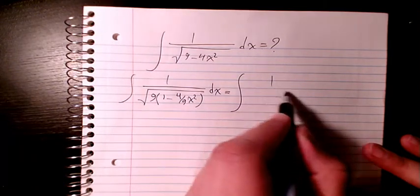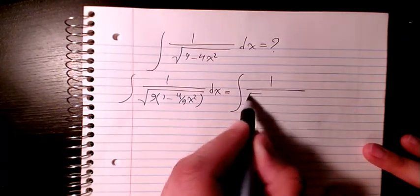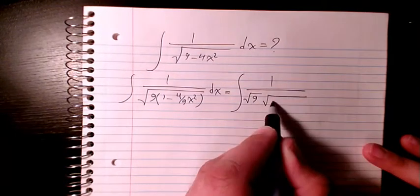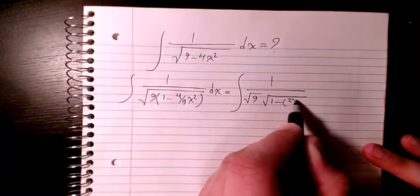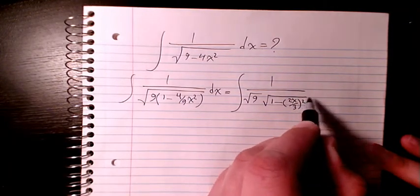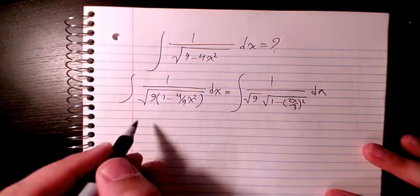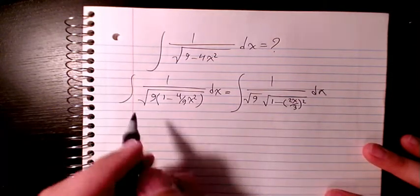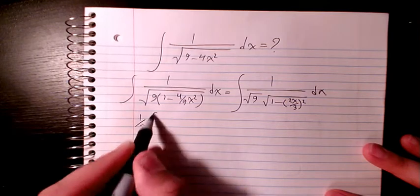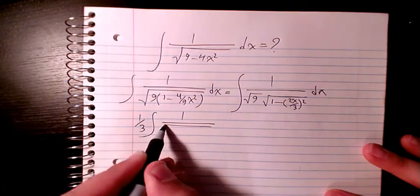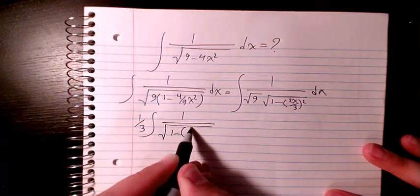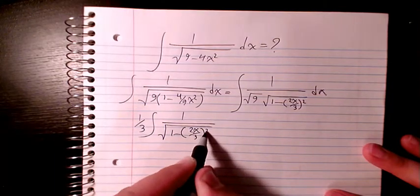Or it will be 1 over square root of 9 times 1 minus 2x over 3 squared dx. So square root of 9 is 3, so I keep it in here, and then I have 1 minus 2x divided by 3 squared dx.